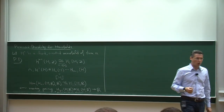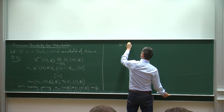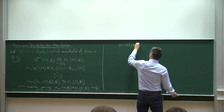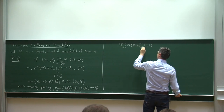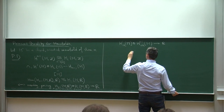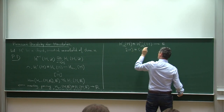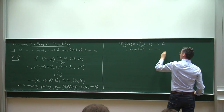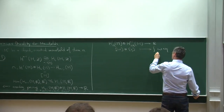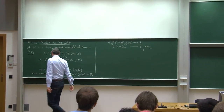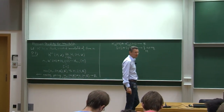If you're coming more from de Rham cohomology, you can envision the intersection form as follows: you take two classes represented by closed forms ω and η, and since their wedge product is a form of degree n, you can integrate it over the compact manifold to get a number. This corresponds to the intersection form, and this form is non-degenerate — that is the theorem.